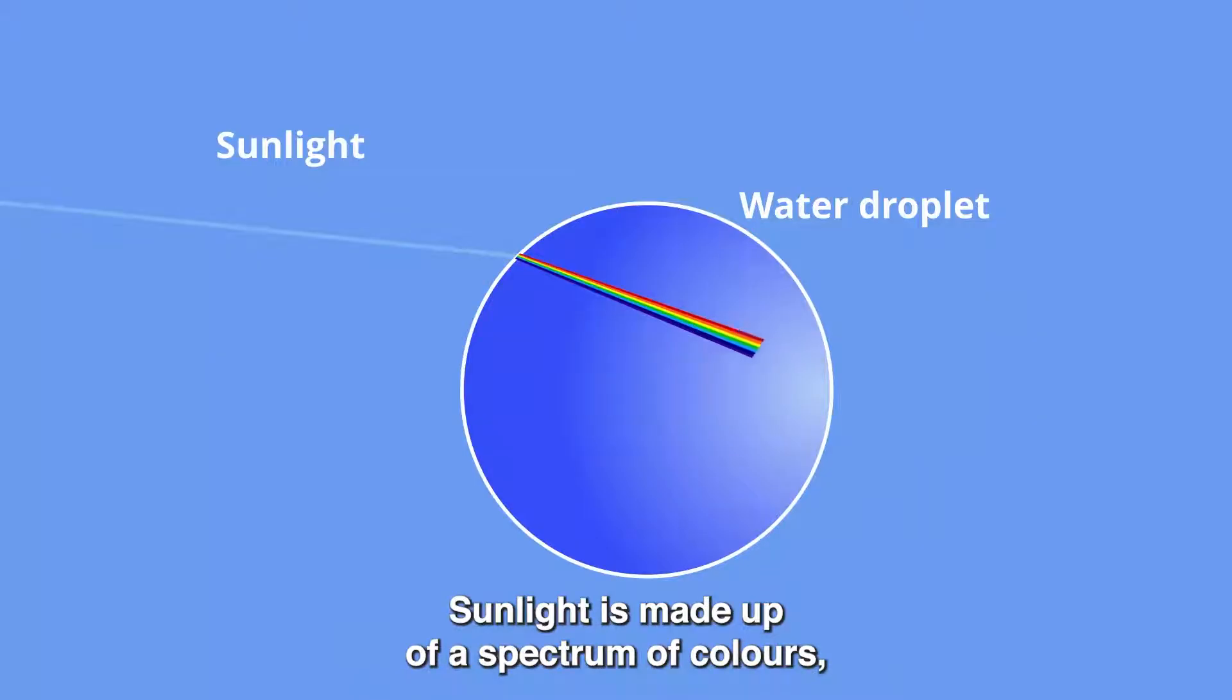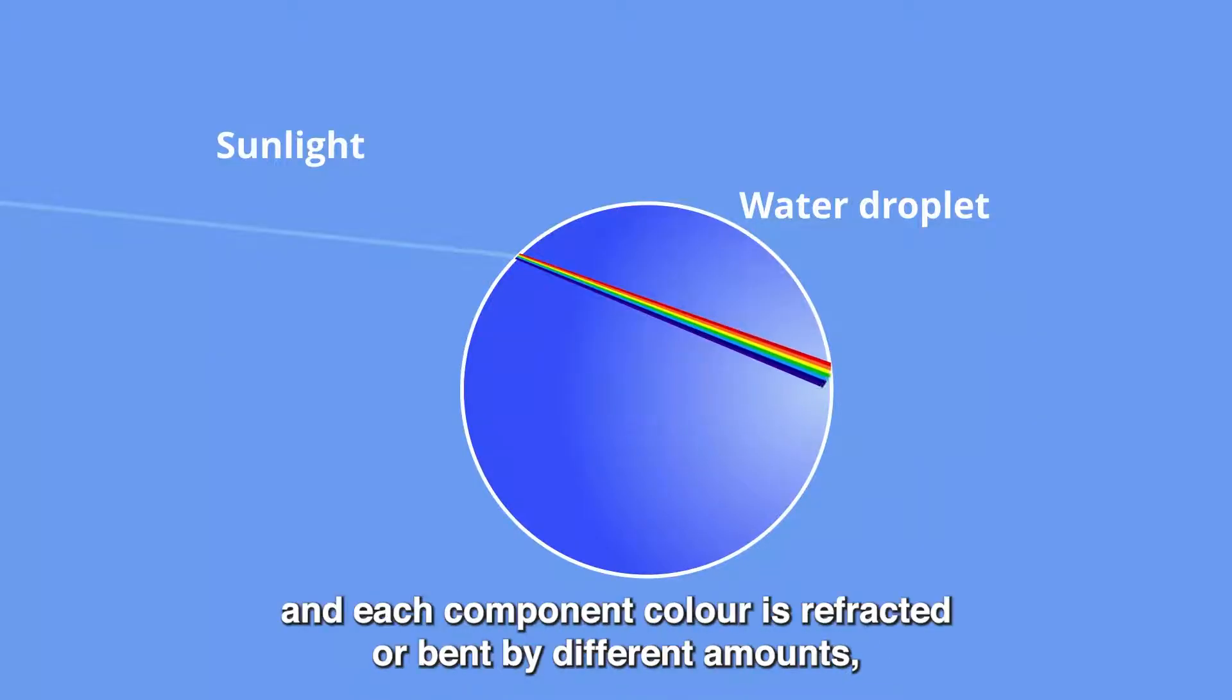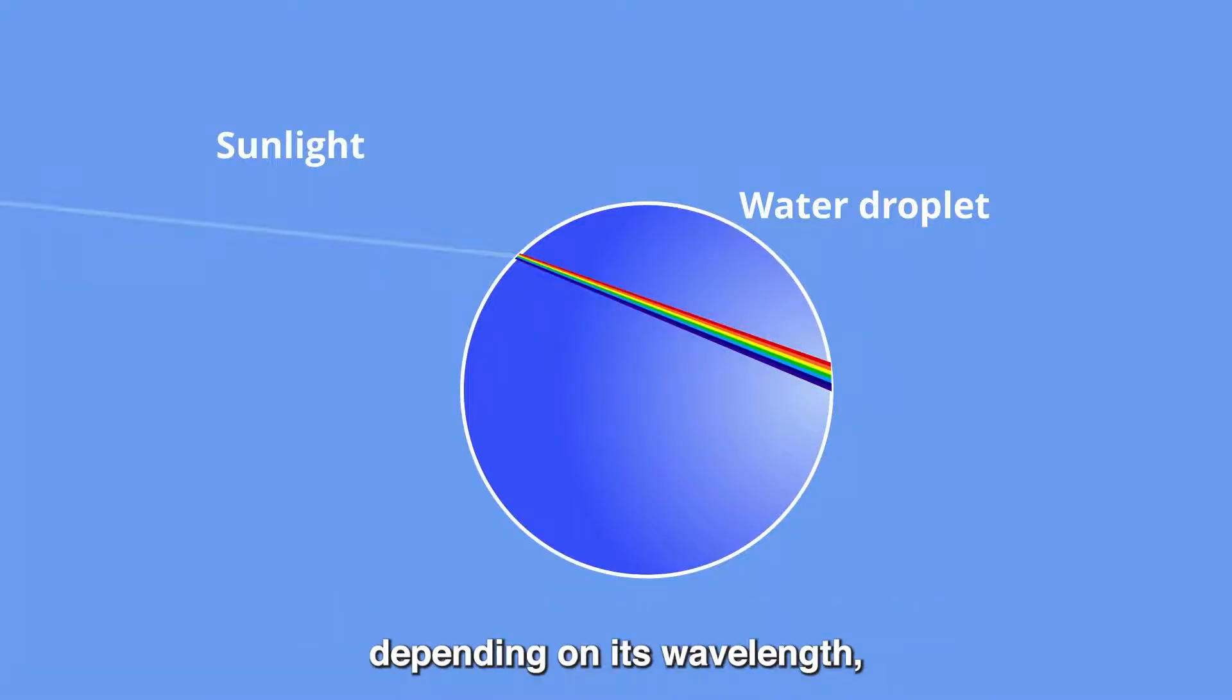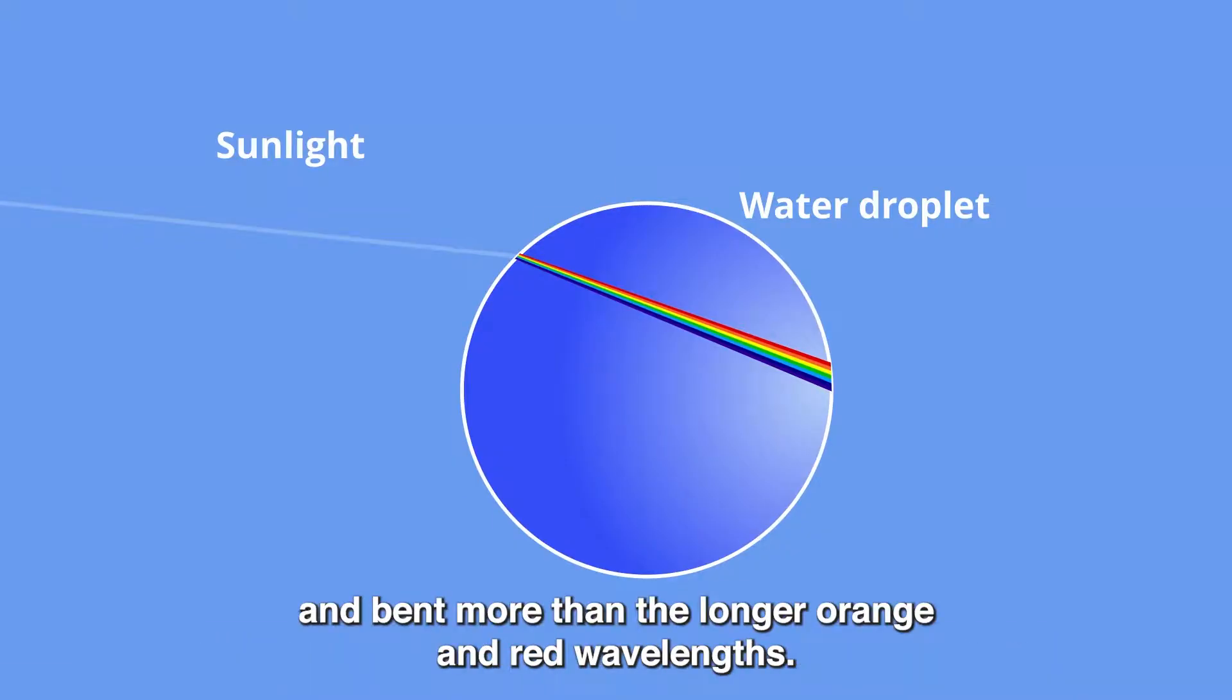Sunlight is made up of a spectrum of colors and each component color is refracted or bent by different amounts depending on its wavelength, with the shorter violet and blue wavelengths slowed and bent more than the longer orange and red wavelengths.